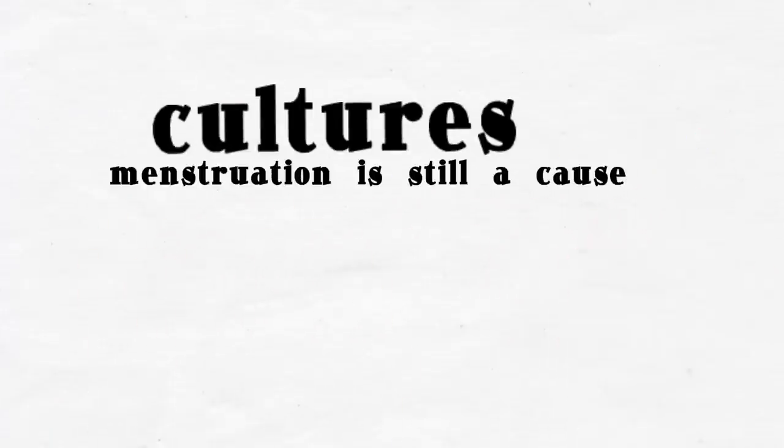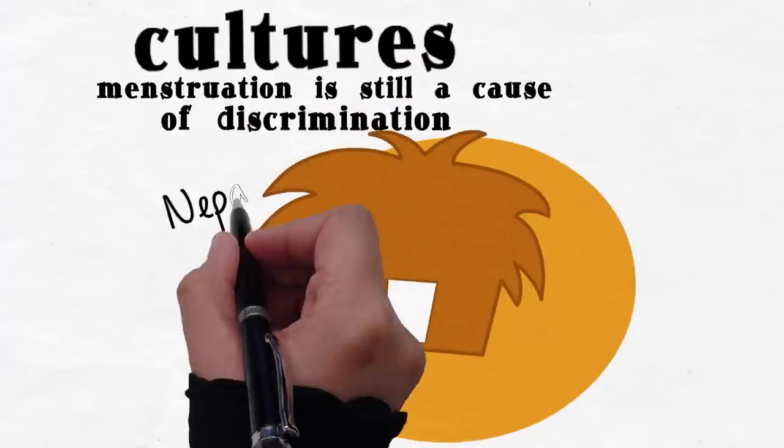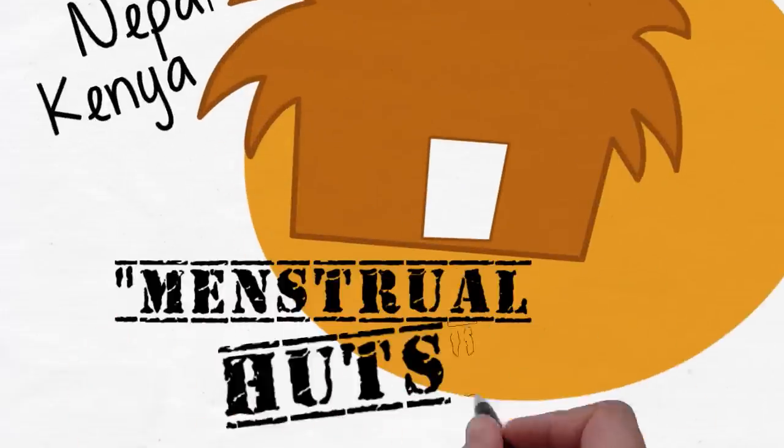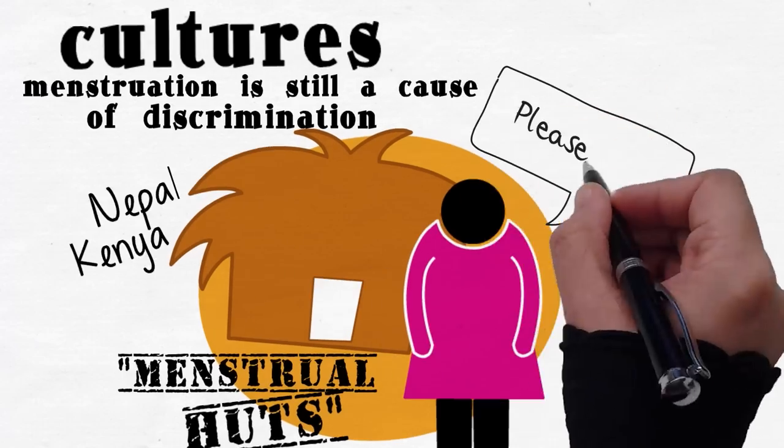This is unlike what is found in other cultures. Menstruation was and still is a cause of discrimination against women. In some rural areas of Nepal and also Kenya, they have menstrual huts that women have to stay in during that time of the month.